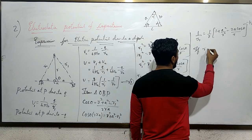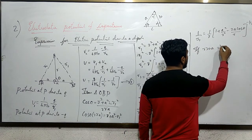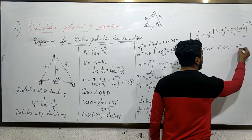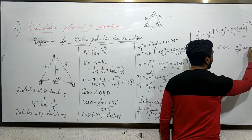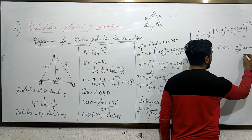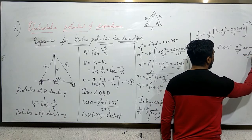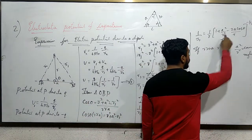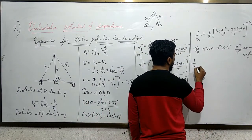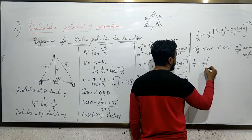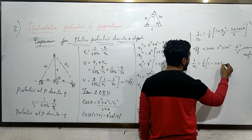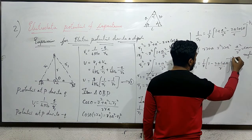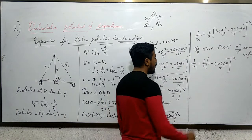If r is much much greater than a, then r² is much much greater than a², so the term a²/r² can be neglected. Therefore: 1/r₁ = (1/r)(1 − 2a cosθ/r)^(−1/2).